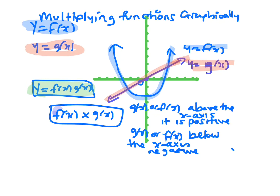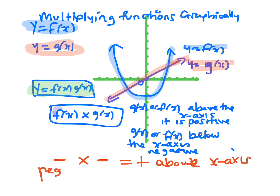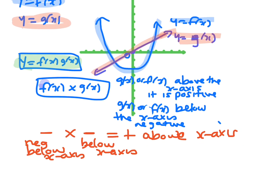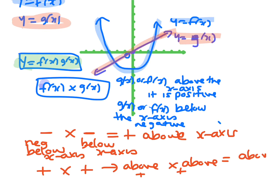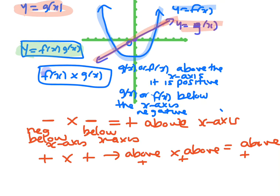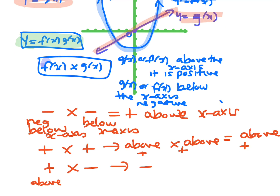If you have a negative times a negative, you end up with a positive, so the result will be above the x-axis. A negative times a negative — both graphs below the x-axis — gives a positive curve above the x-axis. If you have a positive times a positive, both above the x-axis, the result is also above the x-axis. If you've got opposite signs — one above, one below — then a positive times a negative is a negative, so the result ends up below the x-axis.